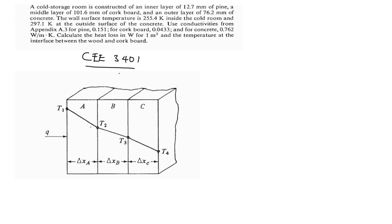For today's tutorial we are going to solve a question under heat transfer between walls in series. We have a question that says a cold storage room is constructed of an inner layer of 12.7 mm of pine, a middle layer of 101.6 mm of corkboard, and an outer layer of 76.2 mm of concrete.